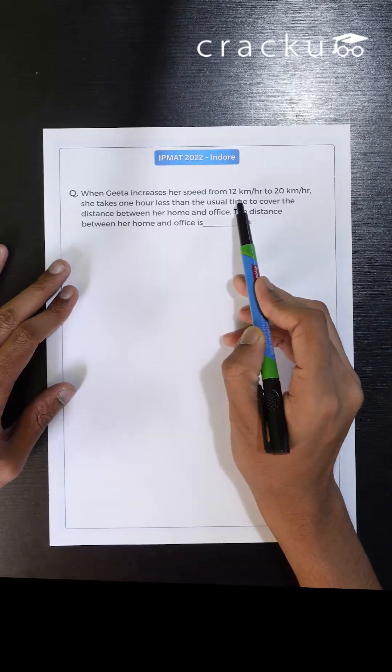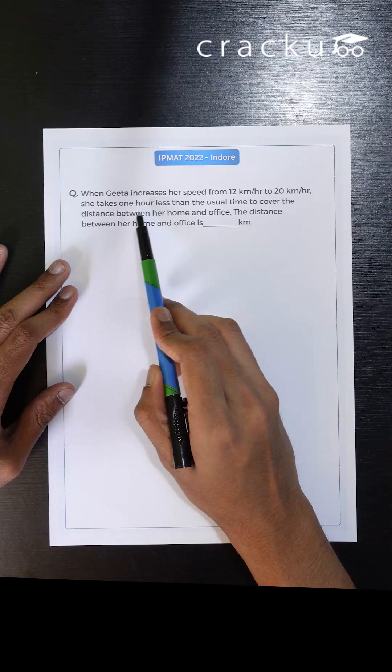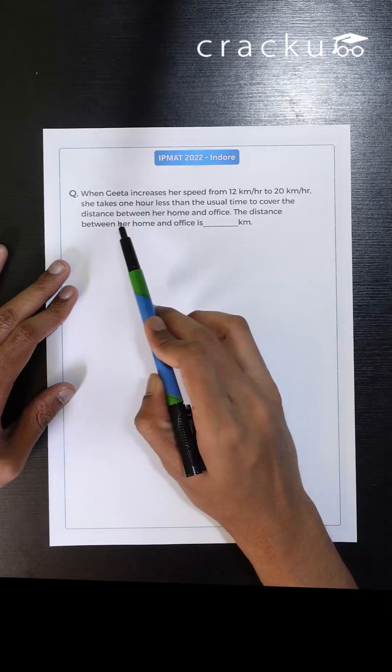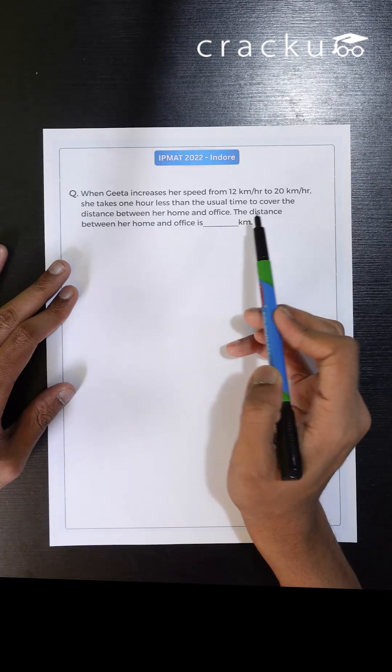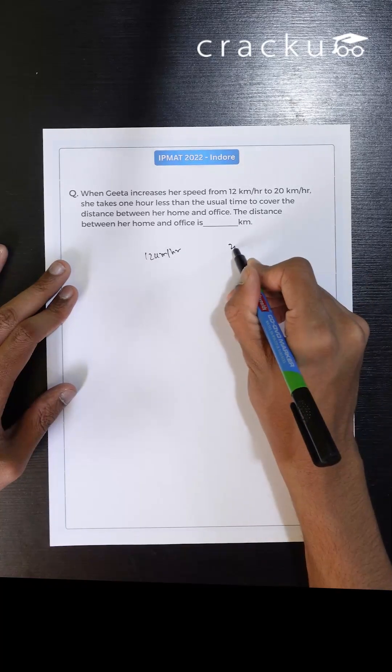In this question, when Geeta increases her speed from 12 kilometers per hour to 20 kilometers per hour, she takes one hour less than the usual time to cover the distance between her home and office. So this is 12 kilometers per hour, this is 20 kilometers per hour.